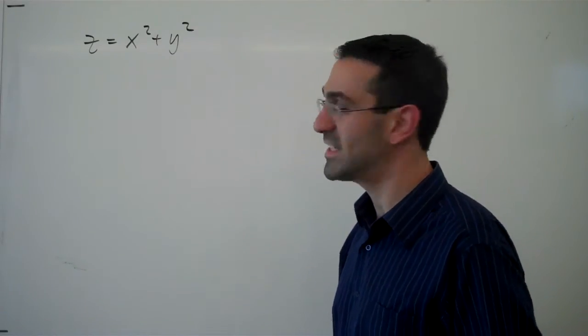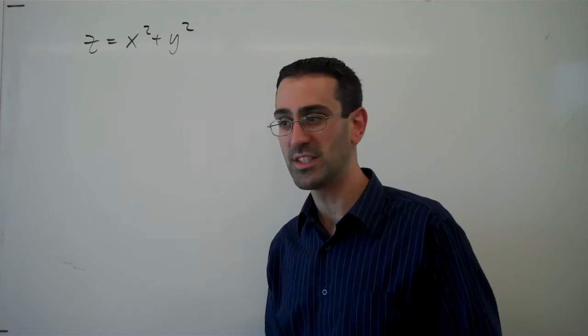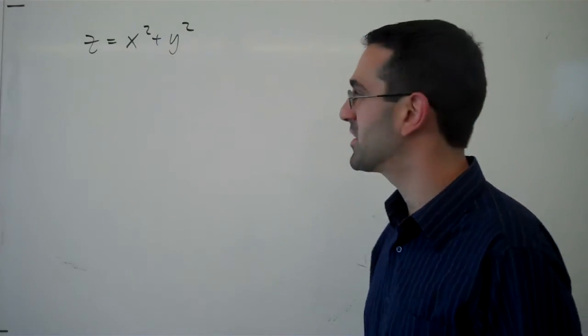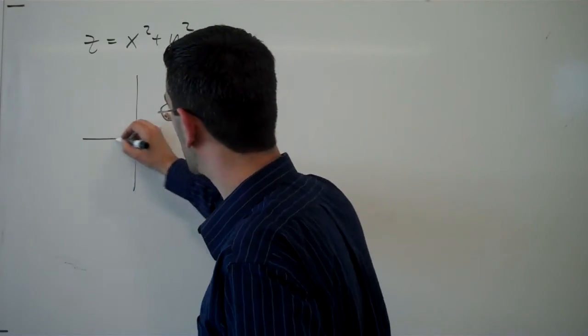So now we want to consider the function z equals x squared plus y squared. And to get some idea what this is going to look like, it might help to think about traces.